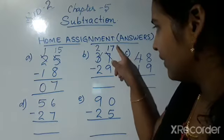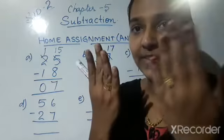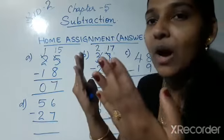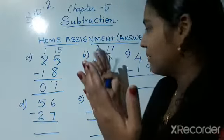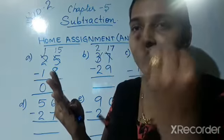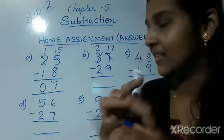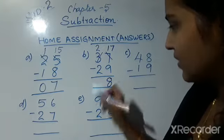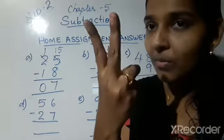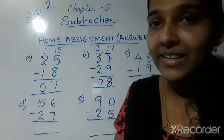Now you can do the subtraction: 17 minus 9. Take 9 fingers first, then count backwards from before 17: 16, 15, 14, 13, 12, 11, 10, 9, 8. So the answer is 8 — write 8 here. Now 2 minus 2 is 0, write 0. So 8 is the answer.